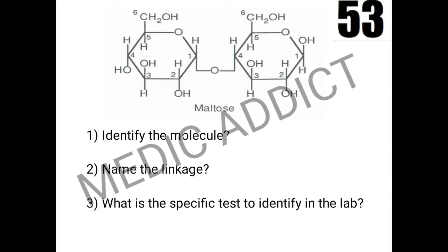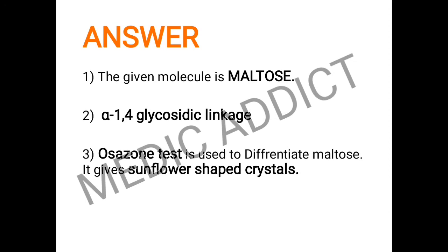The next spot gives an image and we have to identify the molecule, name the linkage, and identify the specific test. Based on the image, the given molecule is maltose. The linkage present is the alpha 1-4 glycosidic linkage — carbon 1 has alpha configuration and carbon 4 also has alpha configuration. The test used to differentiate maltose is the osazone test, which gives sunflower-shaped crystals.